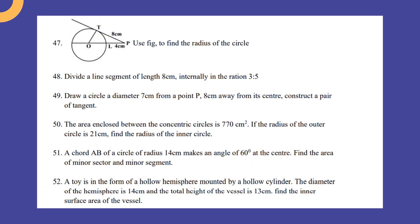Using figure, find the radius of the circle. Divide a line segment of length 8 centimeter internally in the ratio 3:5. Draw a circle of diameter 7 centimeter from point P, 8 centimeter from center, construct a pair of tangents.